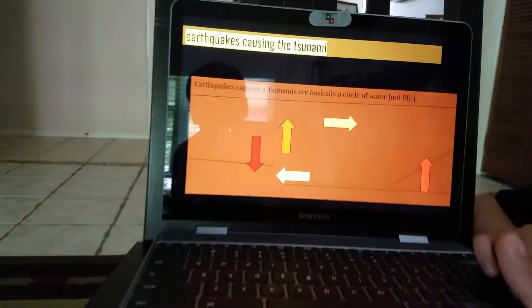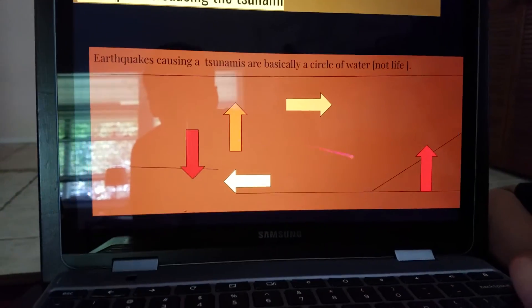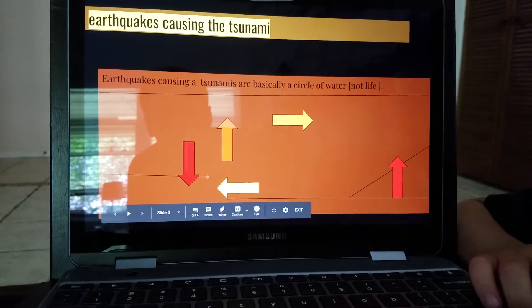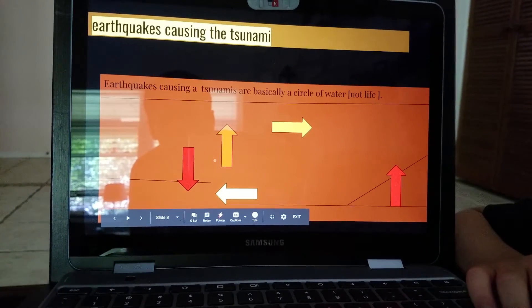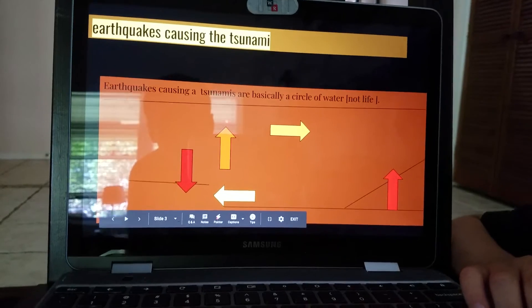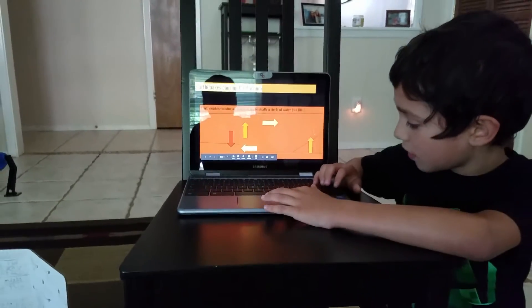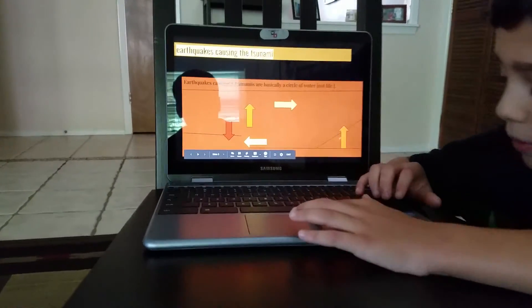And then this is earthquakes causing the tsunami. This is the water draining. This is the floodlight falling. Then this is the pressure of the floodlight falling. This is the movement of water. And then this is the pressure of land.